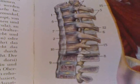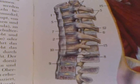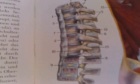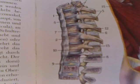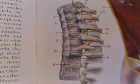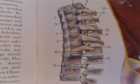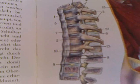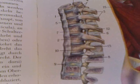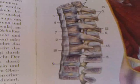Number nine is the intervertebral disc. Number ten is the intervertebral foramen. Number eleven is the vertebral canal. Number twelve is the transverse process. Number thirteen is the costal process.